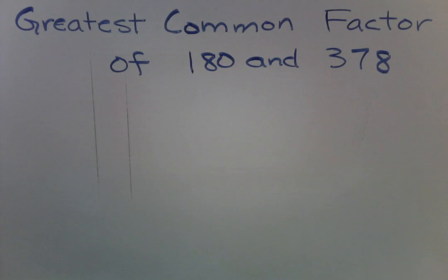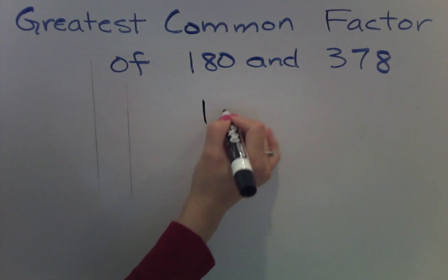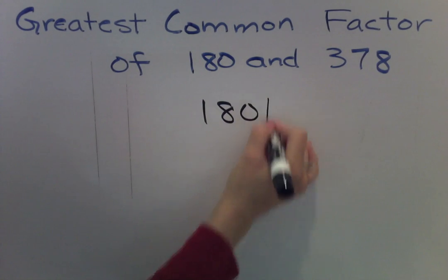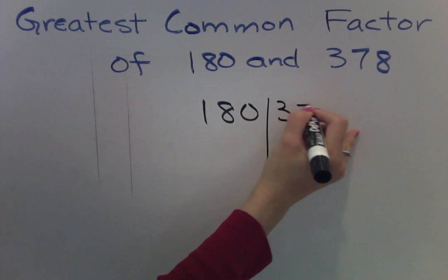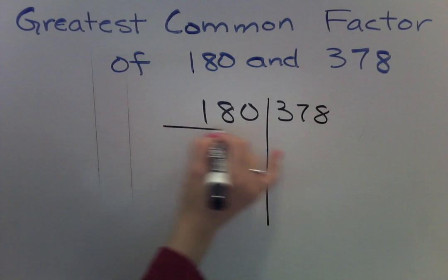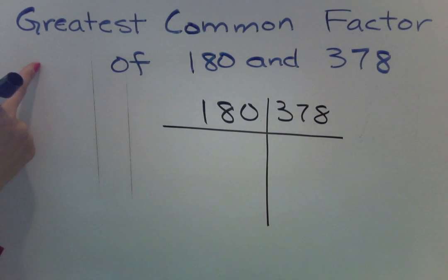Let's look for the greatest common factor of 180 and 378. So what we do is we write the numbers side by side that we're trying to find the greatest common factor for.